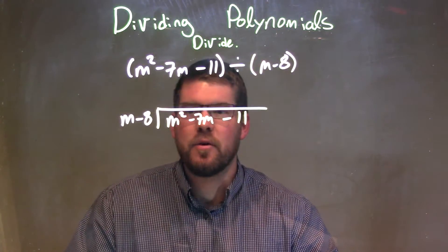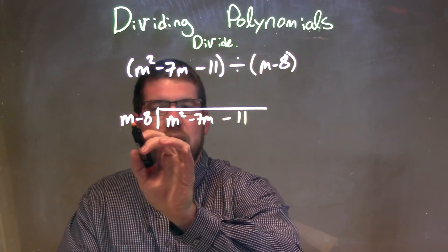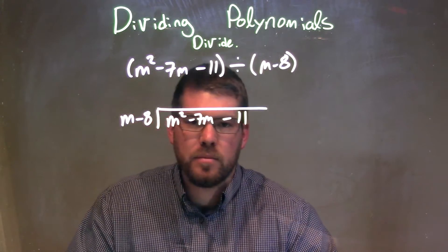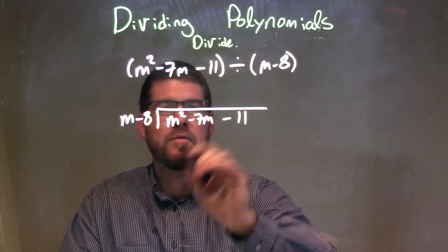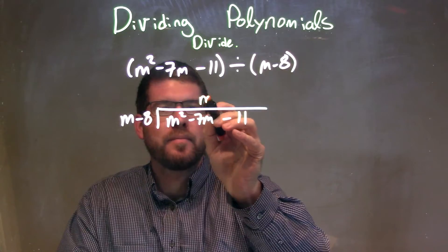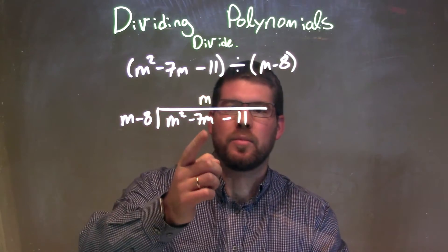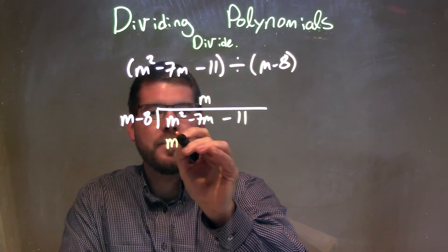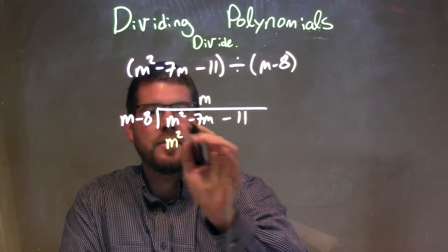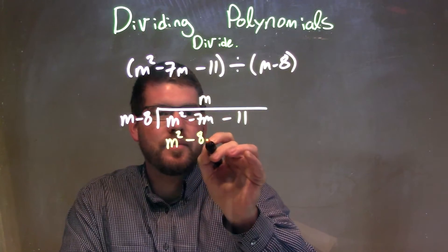I'm going to ask myself, what times m gives me m squared? That's just m, right? m times m gives me m squared. I'll put one m right here above our place value where m is. m times m is m squared, and then m times minus 8 is minus 8m.